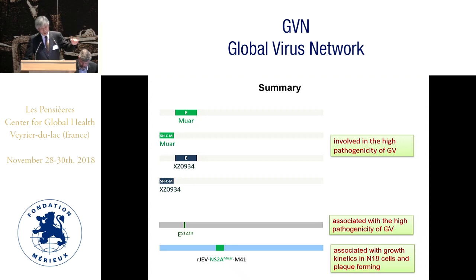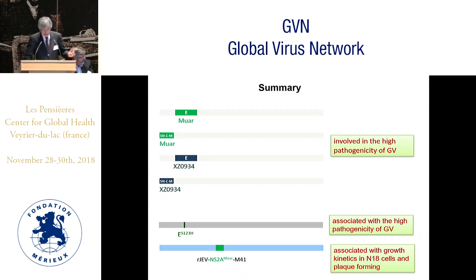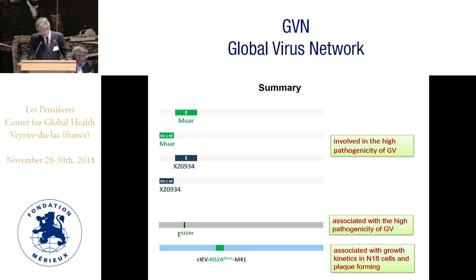To summarize the results so far, these two regions are involved in the high pathogenicity of JEV genotype 5, and a similar result was obtained with another genotype 5 strain. We also found that the 123rd amino acid position of the E protein is associated with the higher pathogenicity of JEV genotype 5. Furthermore, the NS2A region is associated with growth kinetics in neuroblastoma N18 cells and plaque formation.